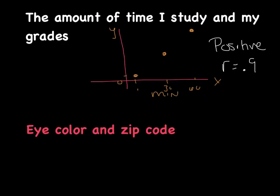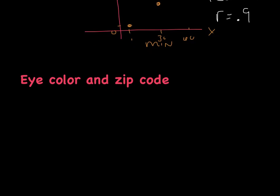My next example might sound goofy, and I hope it does. Your eye color versus your zip code. Does it mean if you have blue eyes, you have to live in one zip code? I don't think so. I would say there's no correlation. And all that means is my points would be scattered. These two things don't relate to each other at all. And my r-value would be pretty darn close to zero.